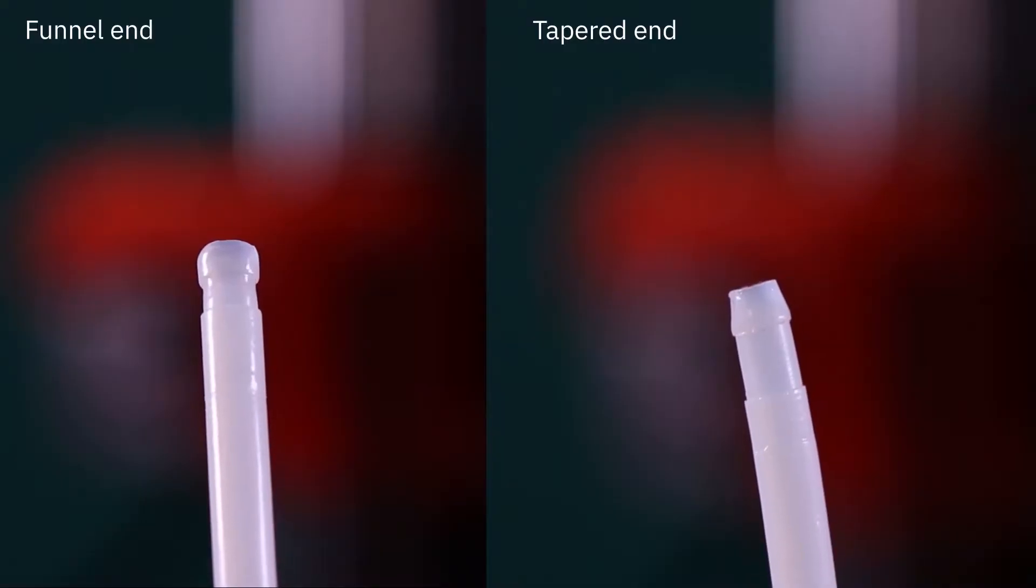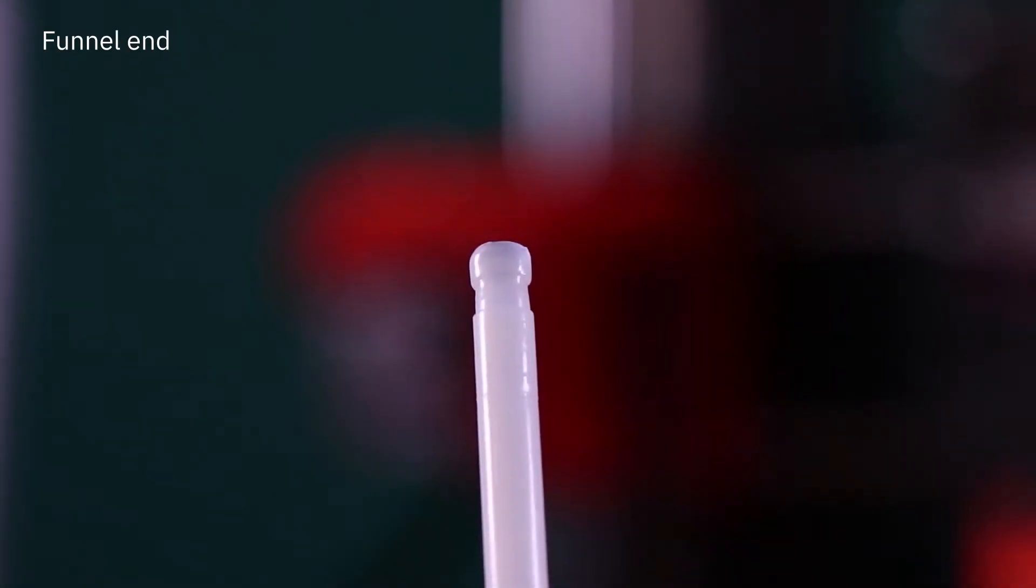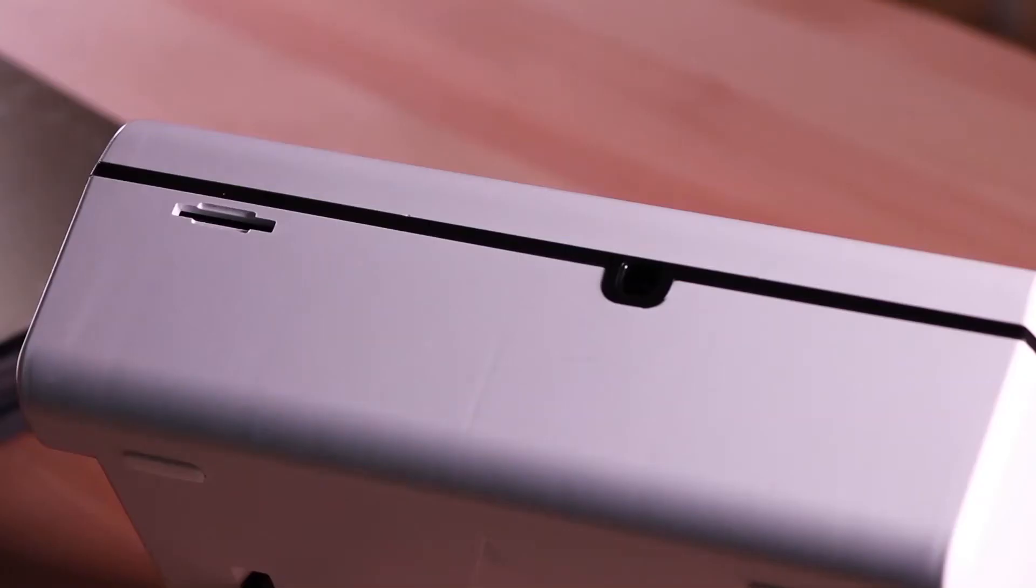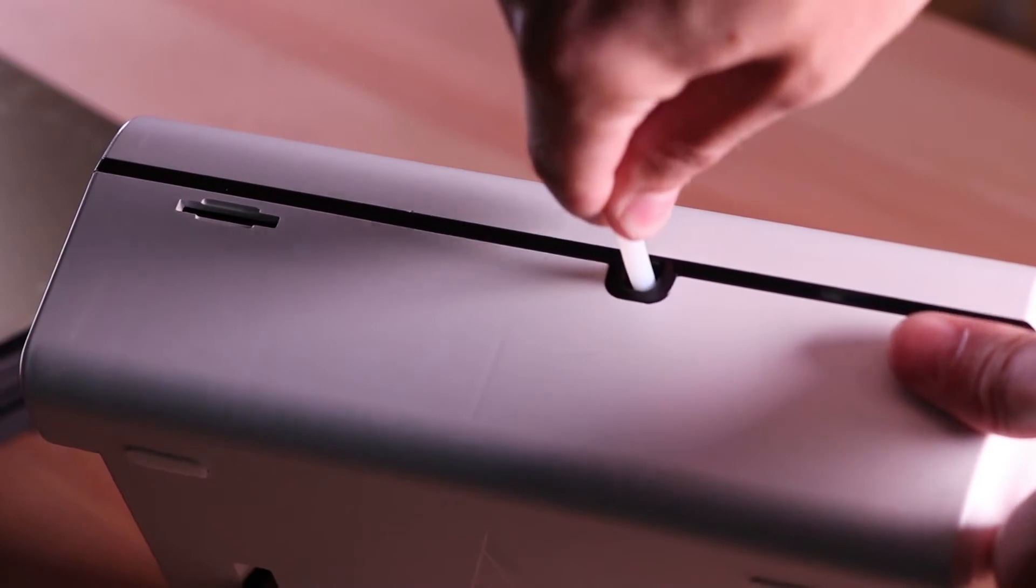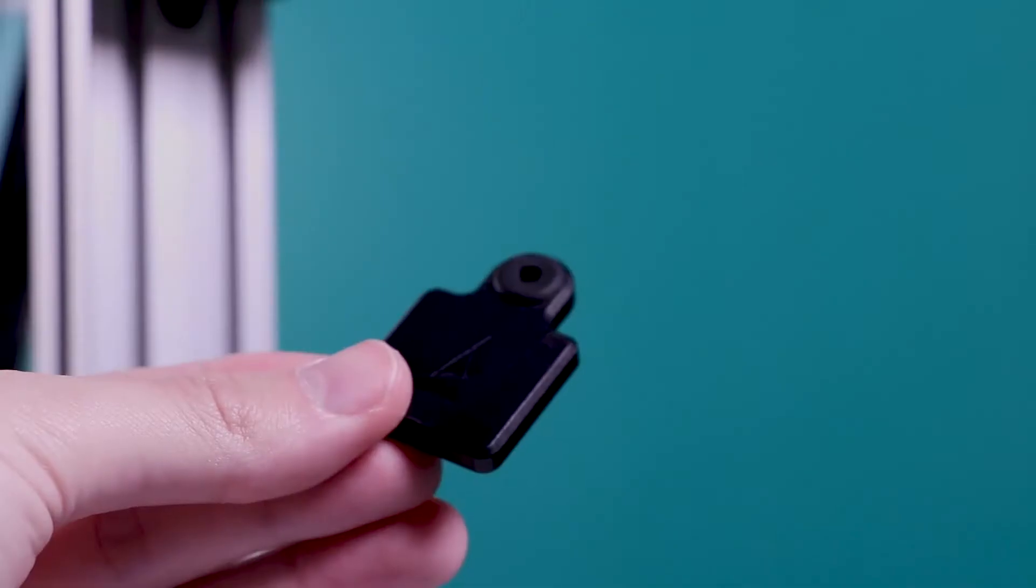The guide tube has two different ends: the funnel end and the tapered end. The funnel end has more of a square shape and goes into the outgoing of the Palette 2. The tapered end has more of a pointed edge and goes into the extruder clip.